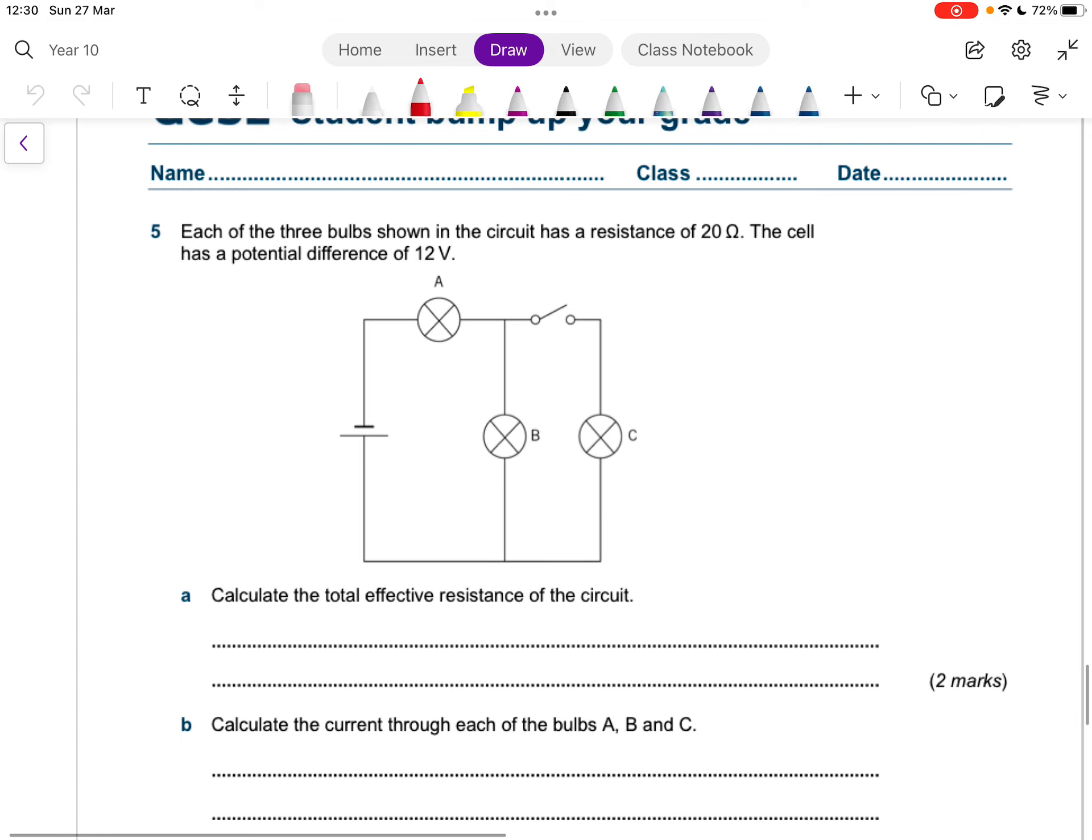Then, now, these are the nice questions. So they say each one of the three bulbs in the circuit has a resistance of 20 ohms. So I'm just going to write it in here, 20 and 20. Then they tell me the cell has a potential of 12 V. The first thing they want you to do is to calculate the effective resistance of the circuit. So what you recognize is that these two are in parallel, and then they're in series with that one. So this is the parallel section.